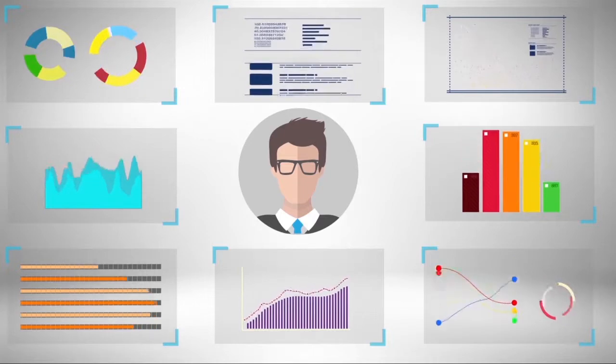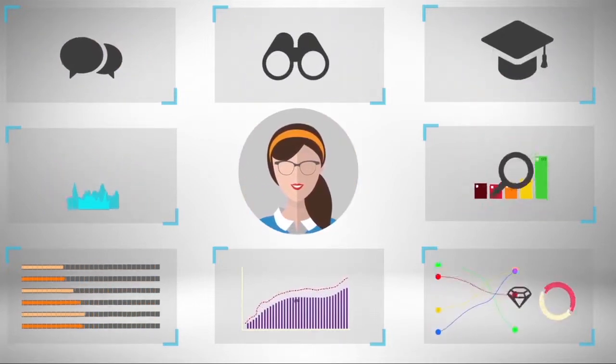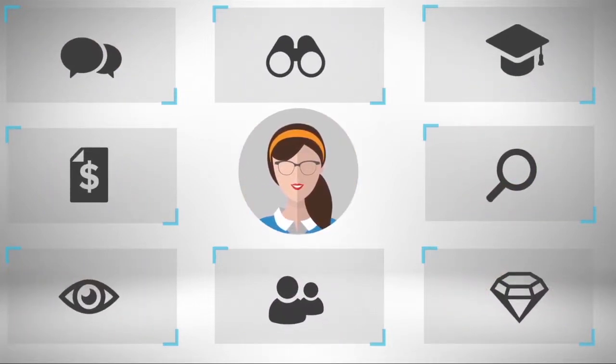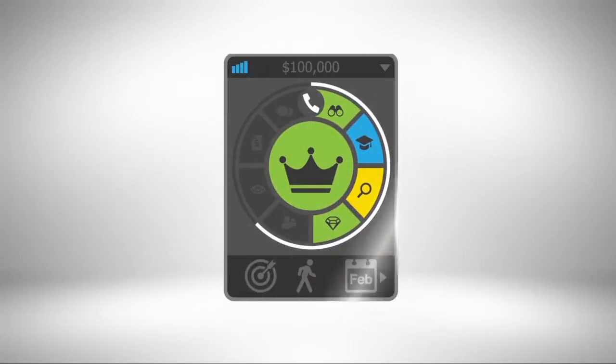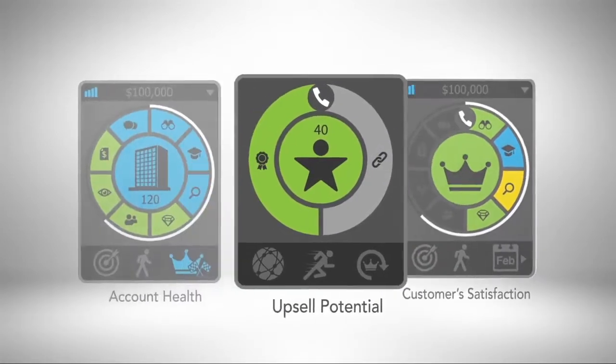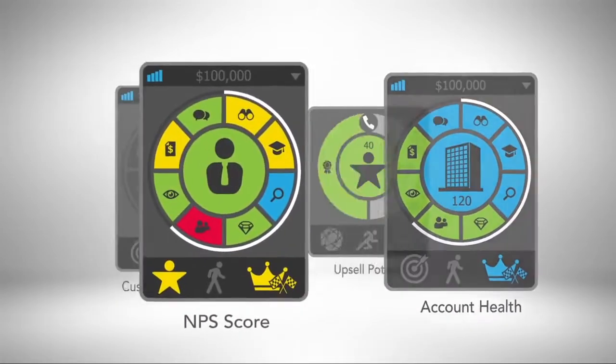Visual Q takes the guesswork out of Jill's critical decisions. By consolidating dozens of key metrics into easily understandable icons, her entire CSM team gains real-time insights into each customer's satisfaction, upsell potential, account health, and NPS score.